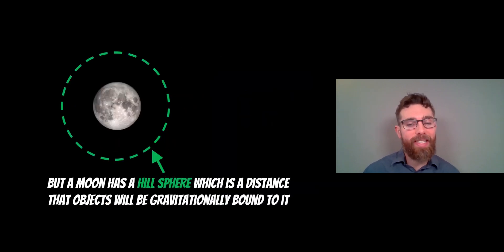Now a moon itself will also have a hill sphere. So the planet has a hill sphere, the moon has a hill sphere, a star has a hill sphere. All these objects will have some hill sphere, but because the moon is quite small in comparison to the Earth, its hill sphere is relatively small. So this moon, or our Moon here, has a hill sphere around it where an object will be gravitationally bound to it.